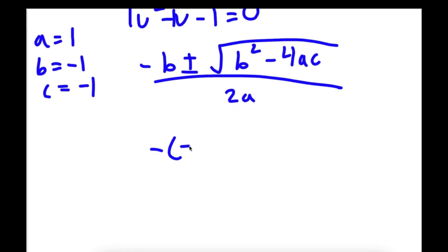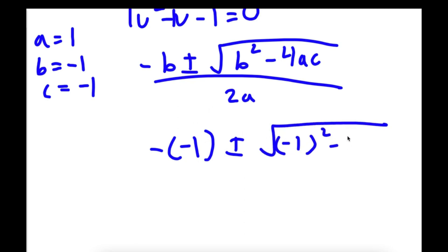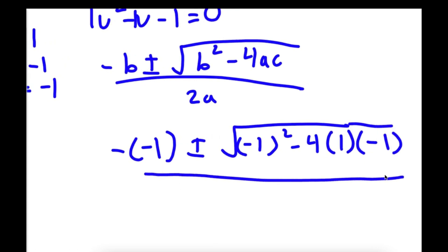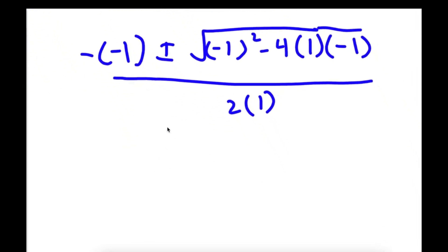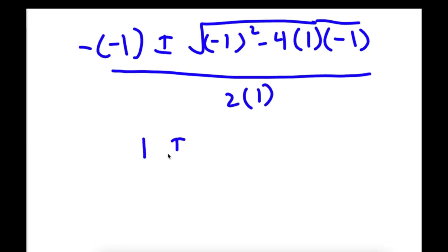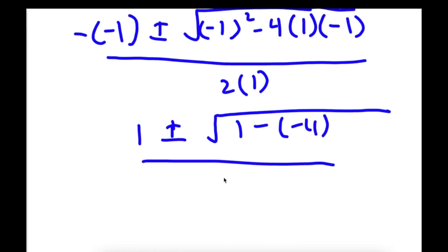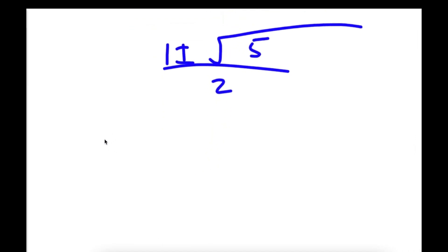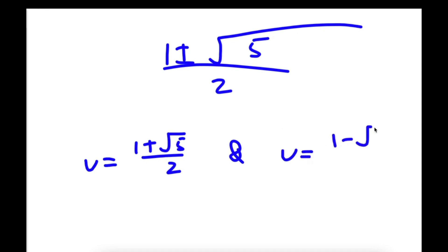Plugging in, I get negative negative 1 plus or minus the square root of negative 1 squared minus 4 times 1 times negative 1, all over 2 times 1. Simplifying: negative negative 1 is positive 1; negative 1 squared is 1; 4 times 1 times negative 1 is negative 4; so we have 1 plus or minus the square root of 1 plus 4, which is 5, over 2. This gives two solutions: u is equal to 1 plus the square root of 5 over 2, and u is equal to 1 minus the square root of 5 over 2.